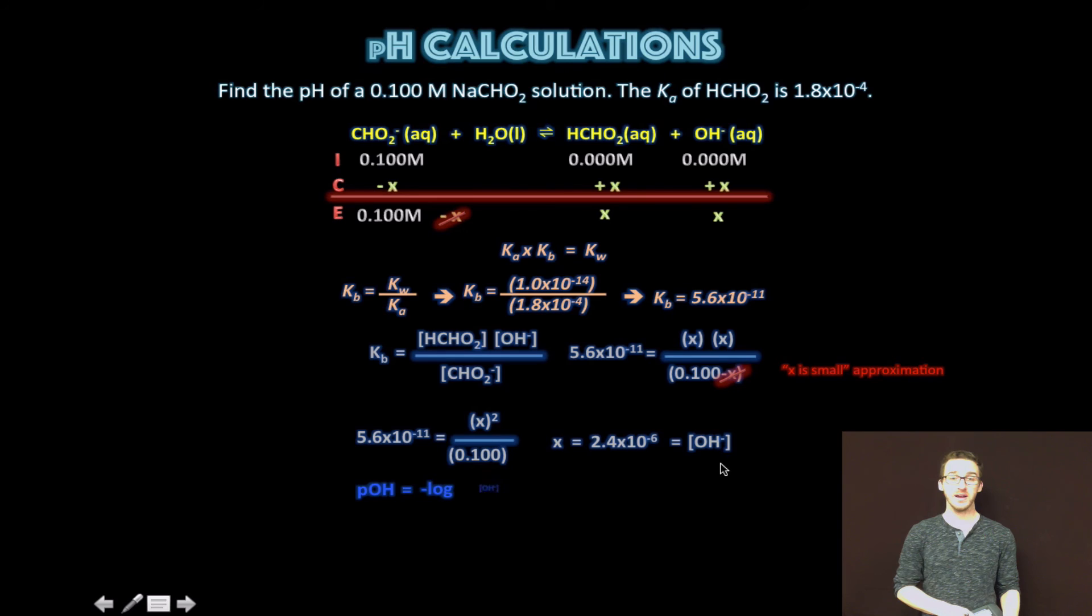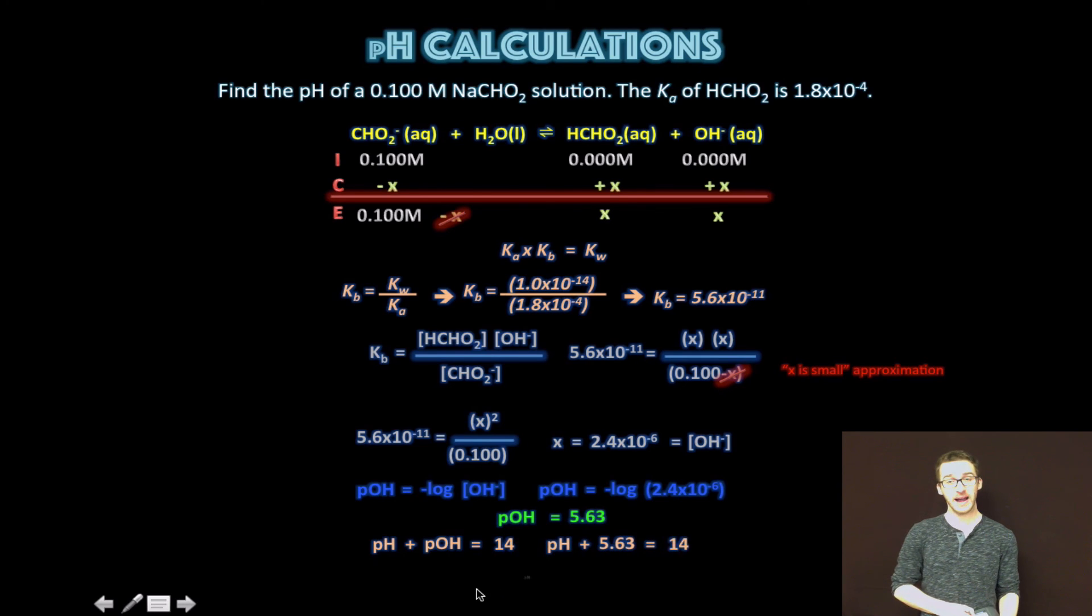And then once we know the hydroxide ion concentration, we can plug that into the formula for pOH and solve for the pOH of this solution, which is 5.63. And then finally recognize that we want the pH. So keep in mind that relationship between pH and pOH. And then simply plug in your pOH value, subtract, and solve for pH. So our final answer here, 8.37.